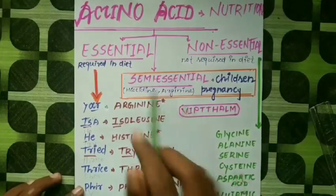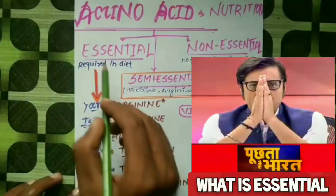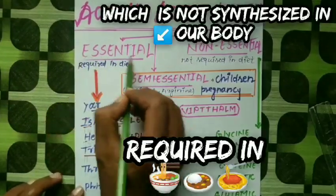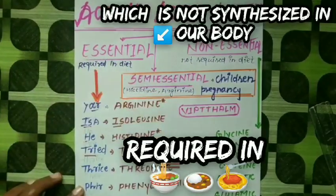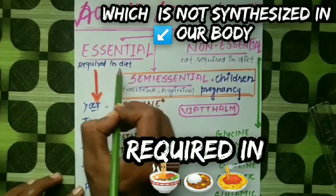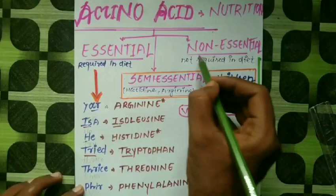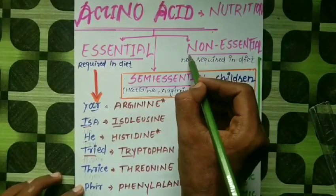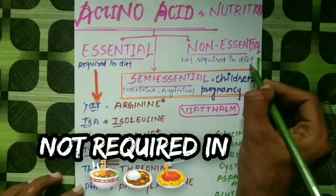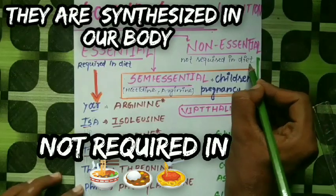So what is essential amino acid? Essential amino acid is which is not synthesized in our body and is required in diet. And non-essential amino acids are which are not required in our diet — they are synthesized in our body.